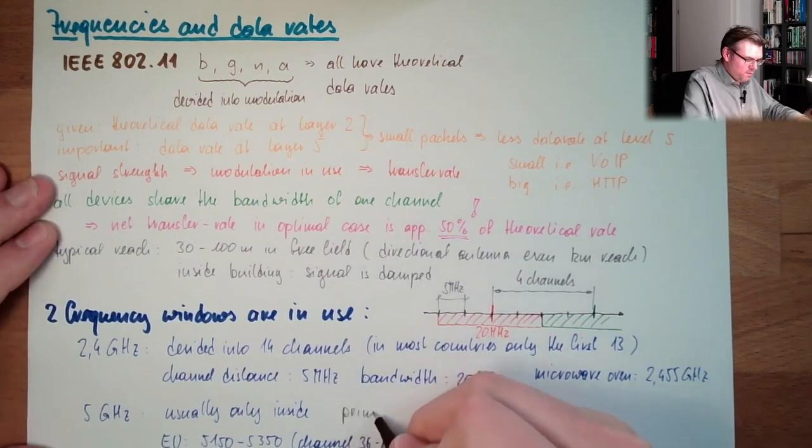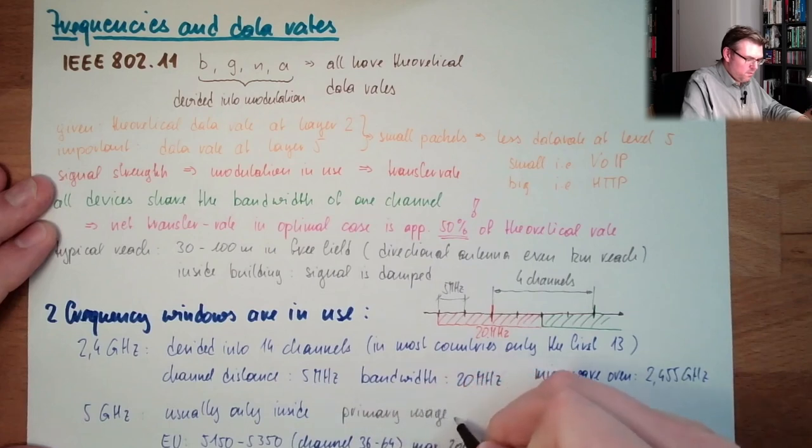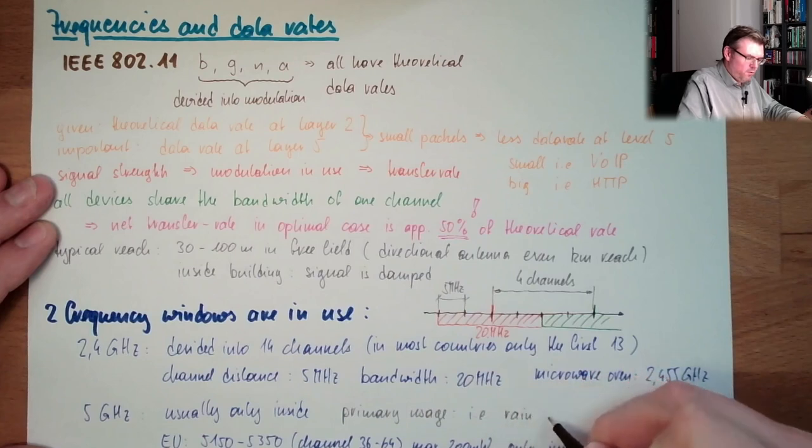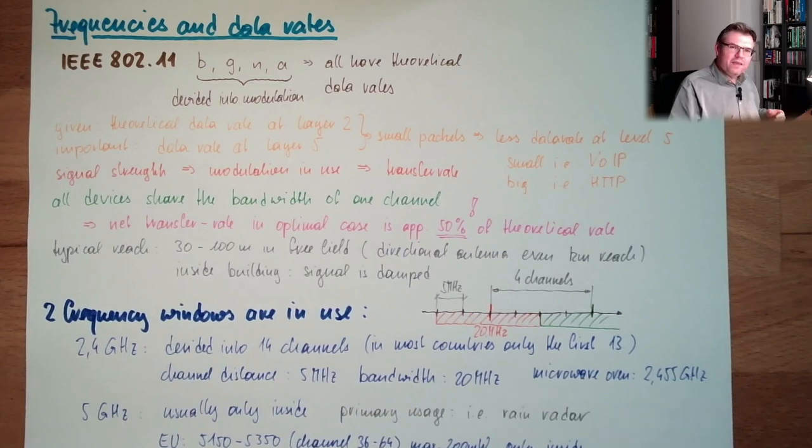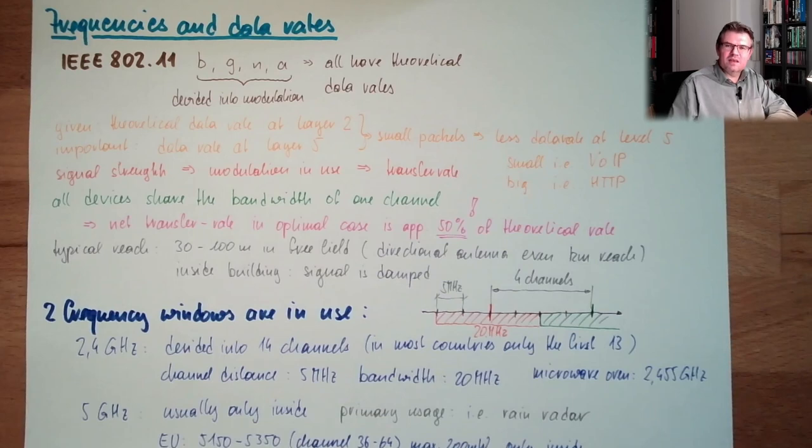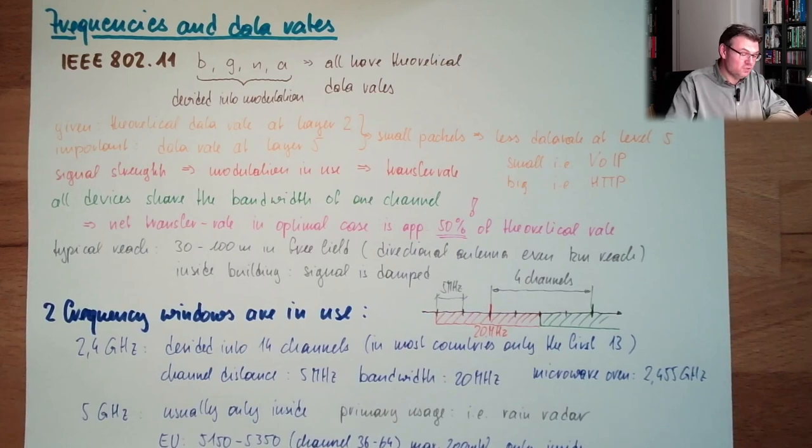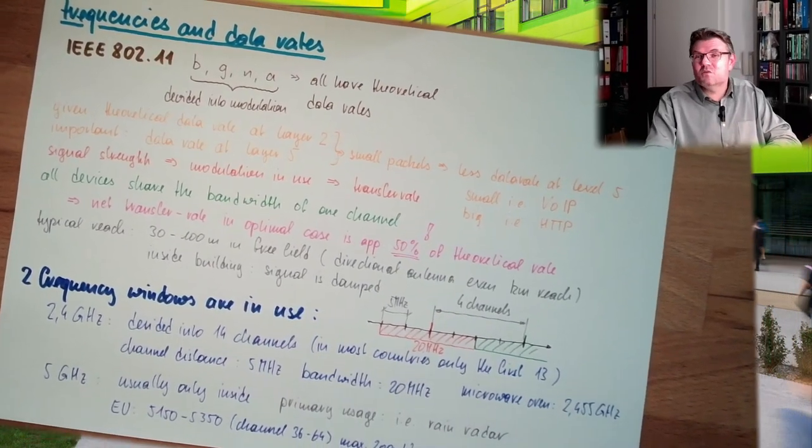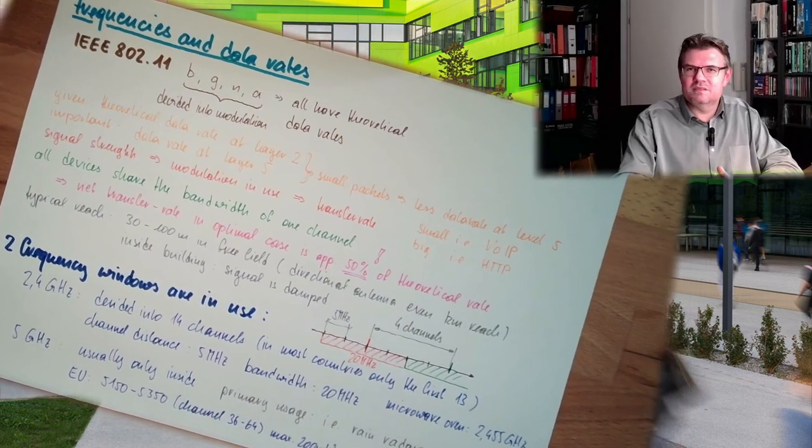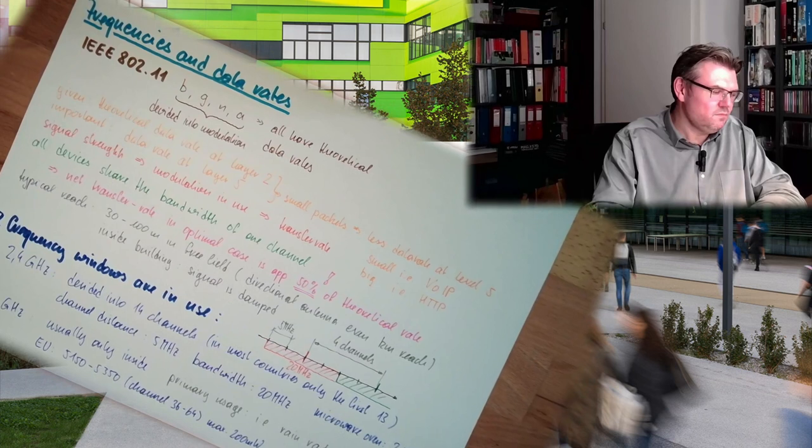Because this bandwidth has also primary usage, and this is for instance rain radar. This is also the 5 gigahertz band. You see all the bands are already occupied and they have to find ways. This is why you can adjust your router in which country you're living, because then the router knows what is allowed, what is not allowed, on which channels it may use. Otherwise you can use other settings, but then you have to live with consequences by law, but it's also not an optimal technical solution because you have to live with disturbances.